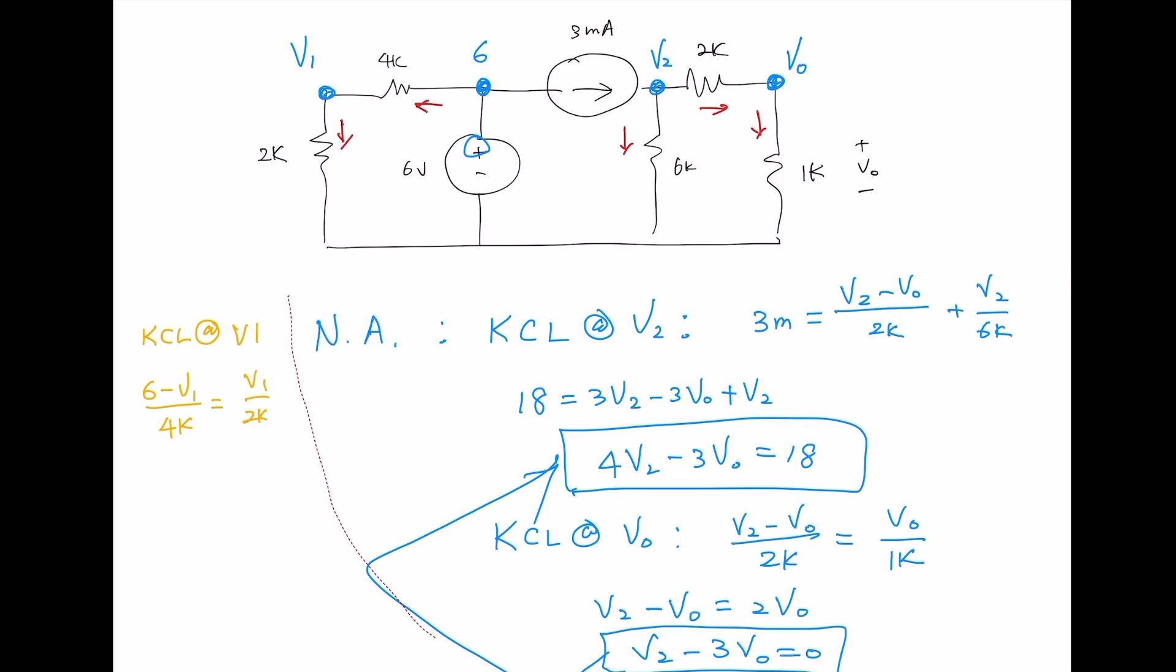So we multiply both sides by 4K. 6 minus V1 equals 2V1 and V1 move it over. 3V1 equals to 6, V1 now equals to 2.